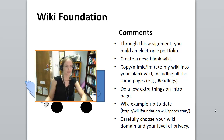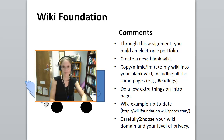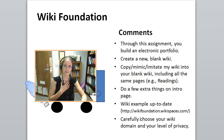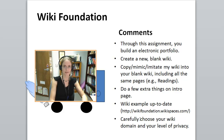Carefully choose your wiki domain and your level of privacy. If you use the University of West Georgia wiki system, you can set your wiki to private — meaning nobody can see it except me — protected, meaning the whole world can see it but only you can edit it, or public, meaning everybody can see and edit it. I recommend at least protected. If you have any doubts about whether you want the world to see it, make it private. You'll need to add me as a member of your wiki — my name is Kay Hewitt, K-H-U-E-T-T — whether it's on the university wiki system or the outside wikispaces.com system.